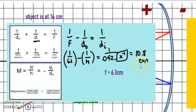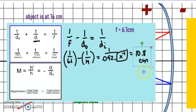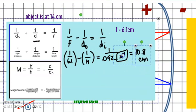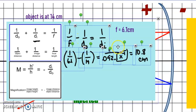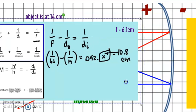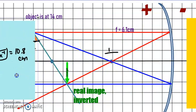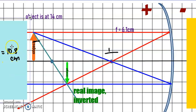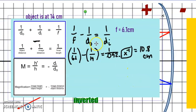I want you to double-check and make sure you get these calculations correct before going further — this is always a surprise to students. So our image is at 10.8 centimeters. Notice that's a positive value — everything on this side of the mirror is a positive value. When we punched in our numbers we had a positive 1/14 and a positive 1/6.1 for both the focal length and the distance of the object.